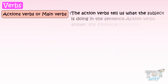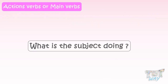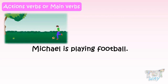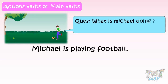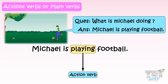The action verbs tell us what the subject is doing in the sentence. Action verbs answer the following question: what is the subject doing? For example, Michael is playing football. So, what is Michael doing? Michael is playing. So, the action verb is 'playing'.